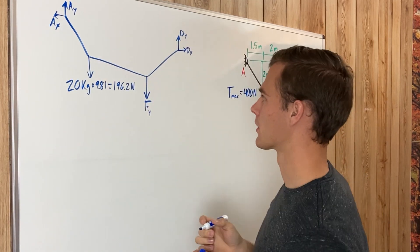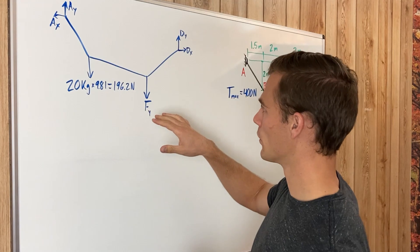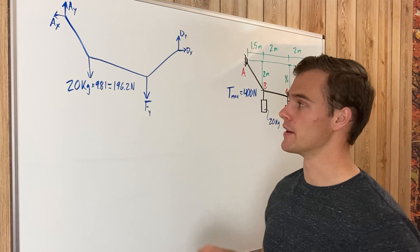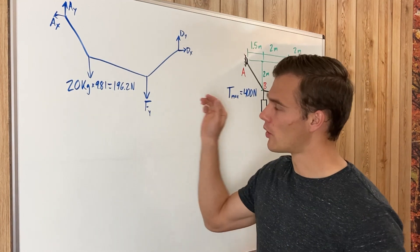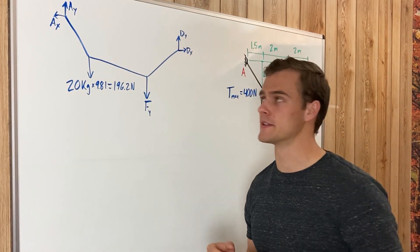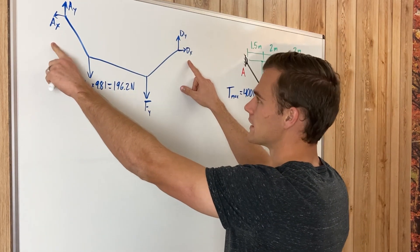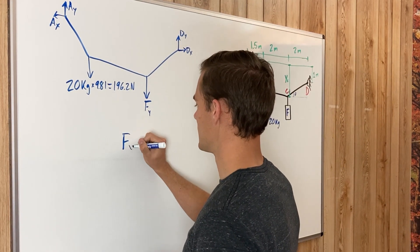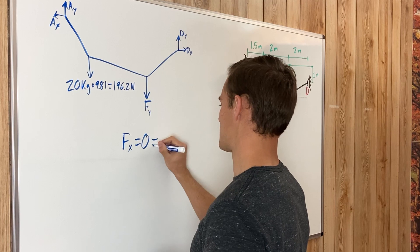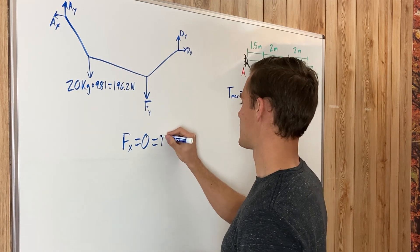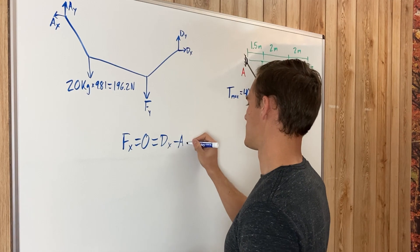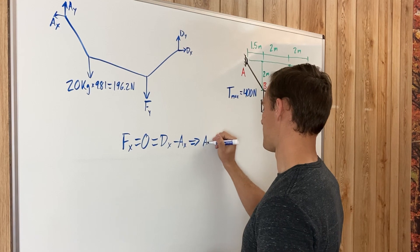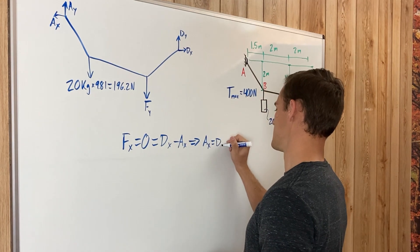One thing to always remember is that the horizontal component of the tension throughout the entire cable is going to be the same. That means reaction forces D sub x and A sub x are equal. When we sum forces in the x direction and set it equal to zero, we only have D sub x minus A sub x, giving us A sub x equals D sub x.